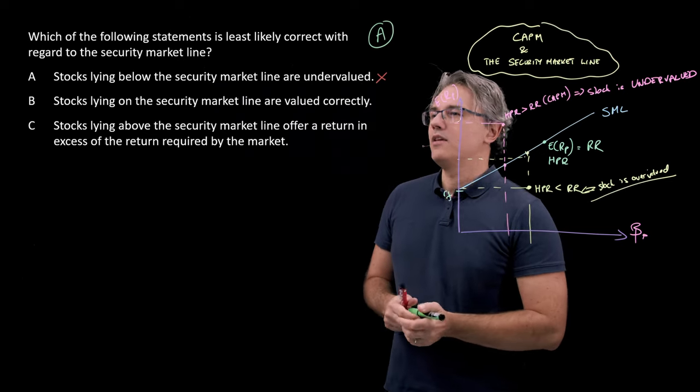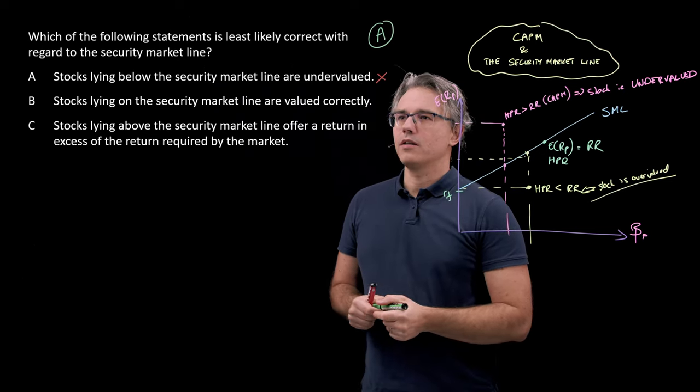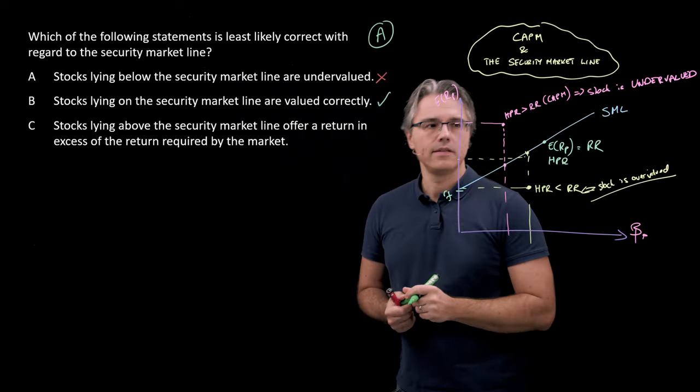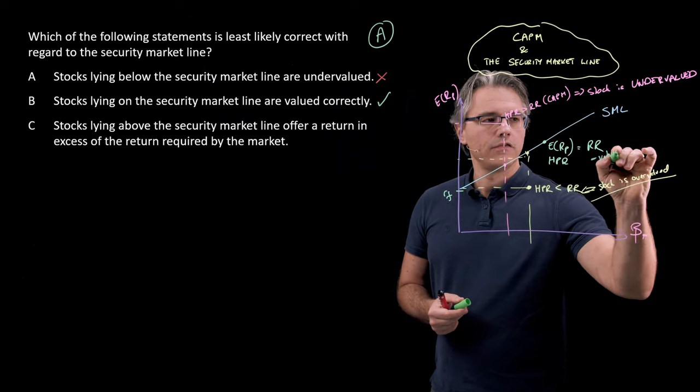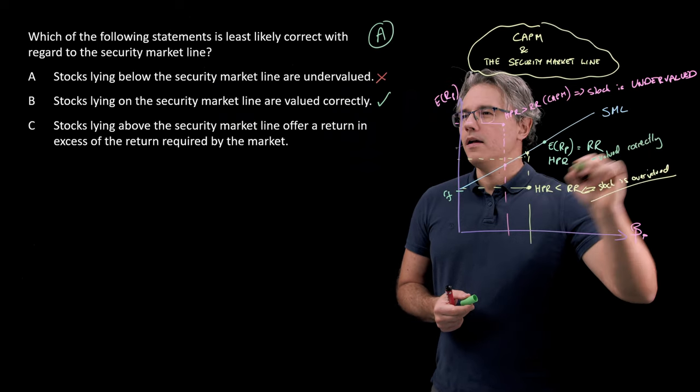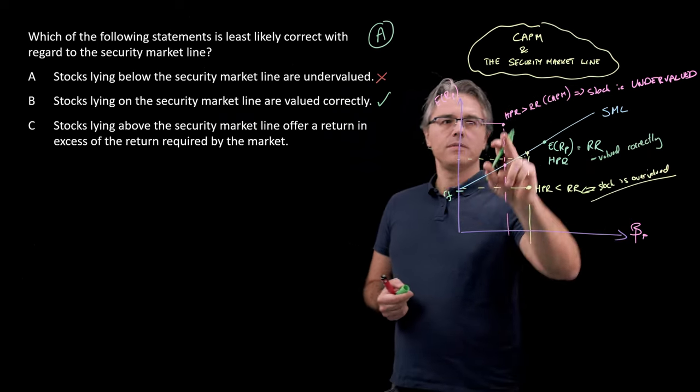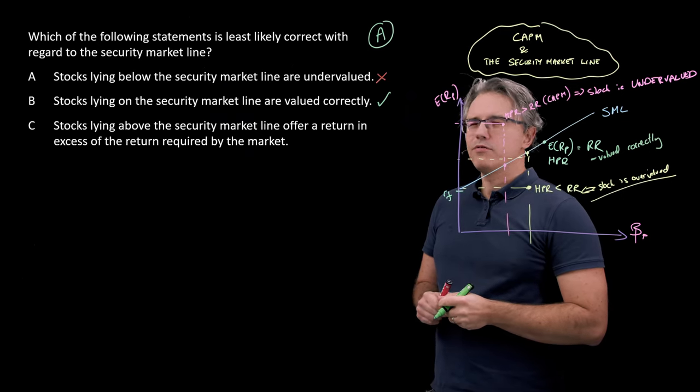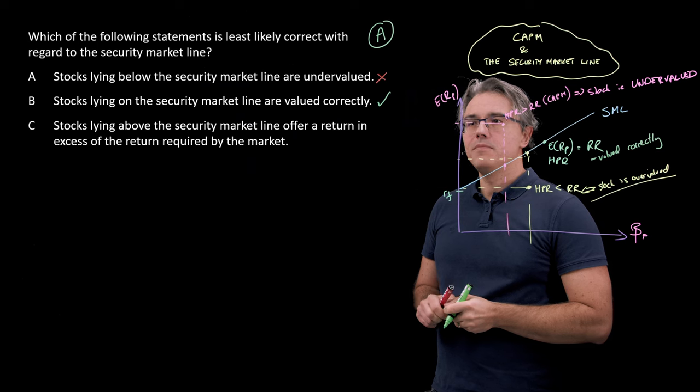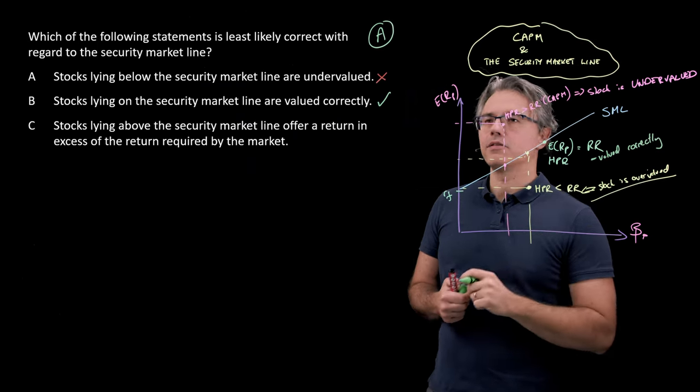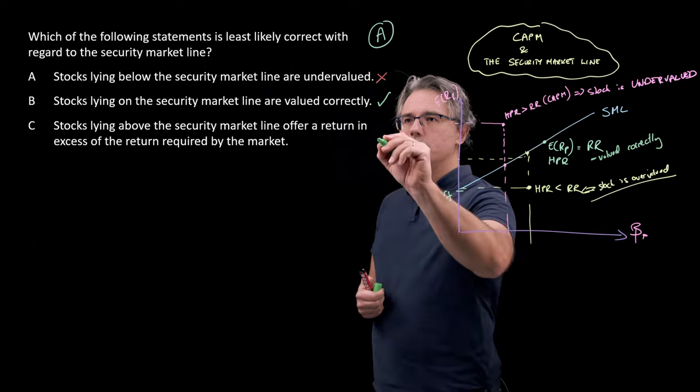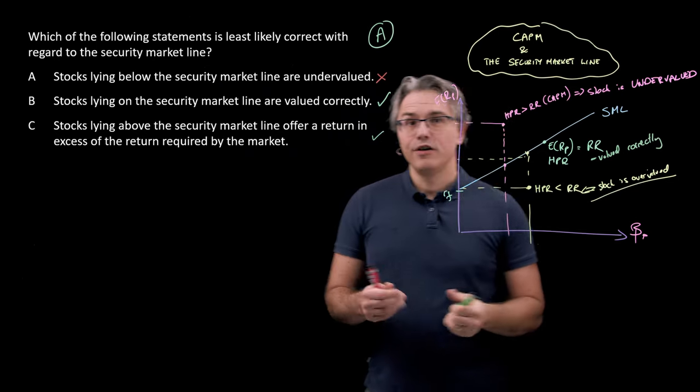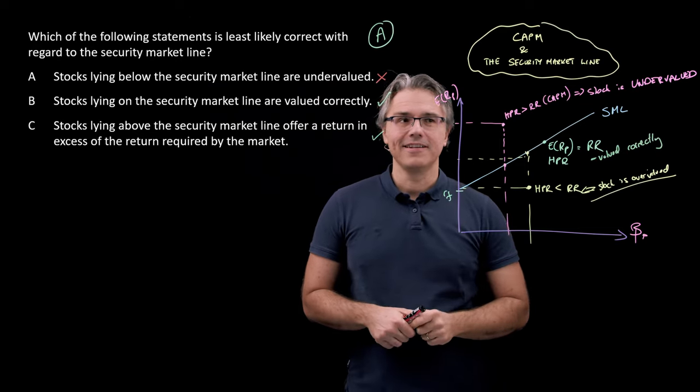Let's have a look at the other ones. Stocks lying on the security market line are valued correctly. Yes, that's absolutely right. We set this, so valued correctly. And stocks lying above the security market line, like over here, offer a return in excess of the return required by the market, right, required given the level of systematic risk. That's absolutely fine, which just confirms that the answer to this question was indeed answer A.